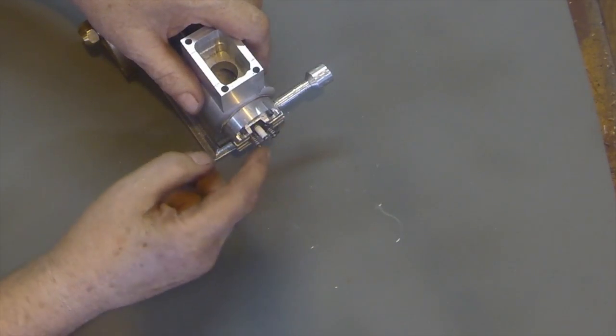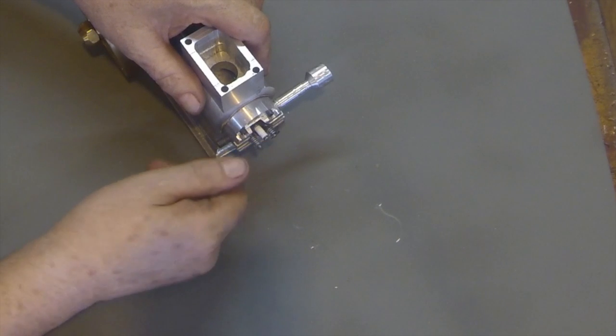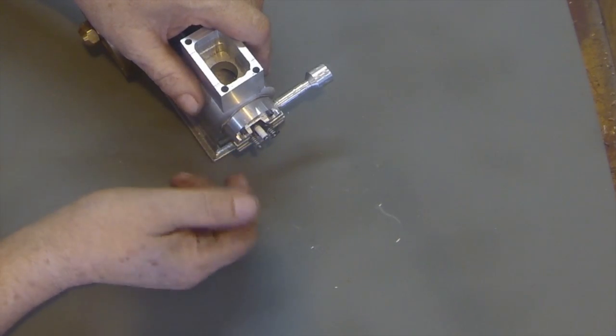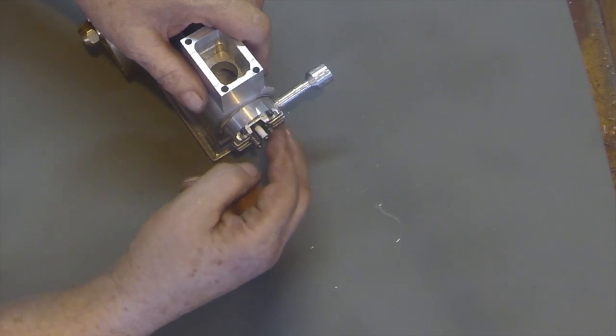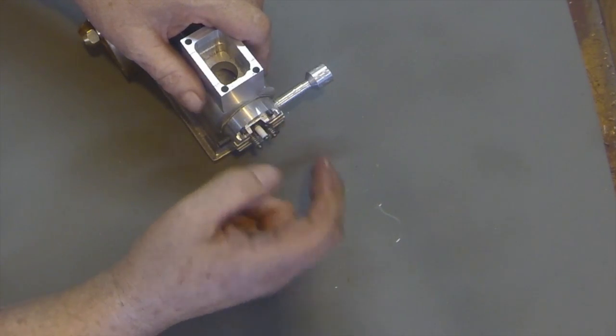You can see here this is the spark plug. This is the inlet valve and I've just got a plug in here for where the fuel mixture goes. And this is the exhaust valve.